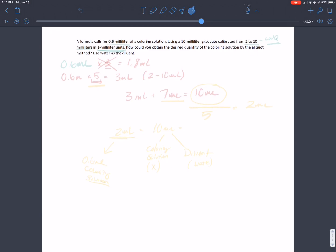So I'm going to read this question out. The question is stating that a formula calls for 0.6 milliliters of a coloring solution and we're going to be using a 10 milliliter graduate calibrated from 2 to 10 milliliters in 1 milliliter units.